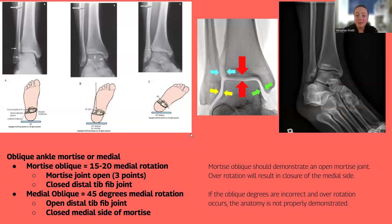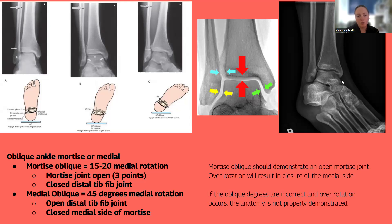Here's an ankle example — we have two oblique options. We have the mortise, which is a 15 to 20 degree internal rotation that will open the mortise joint. These three areas should be open on your mortise joint, but the distal tib-fib joint is closed. On the medial oblique with a 45-degree oblique, we should have an open distal tib-fib joint, but the mortise connection point is now closed. If an image is supposed to be a mortise oblique but is obliqued too much, the mortise joint won't be open.